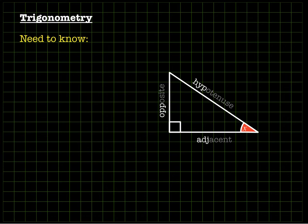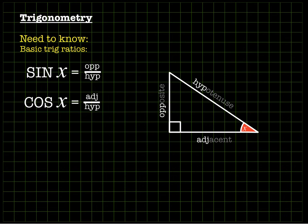So you need to know the basic trigonometric ratios, and they are: sine of X or sine of the missing angle equals the opposite over the hypotenuse, cos equals adjacent over hypotenuse, and tan equals opposite over adjacent. I'm assuming that you've been taught this already and this is just for revision really.